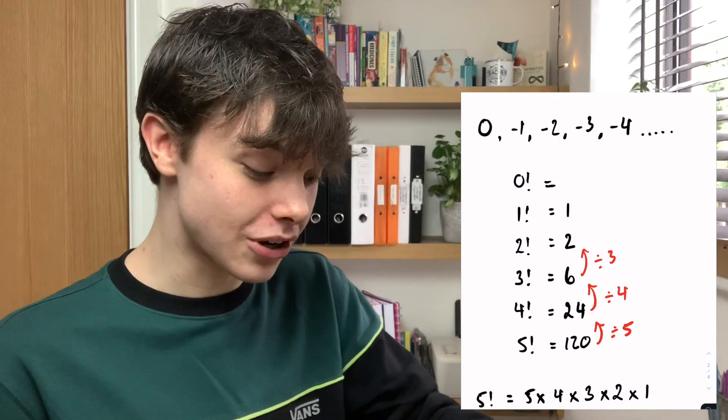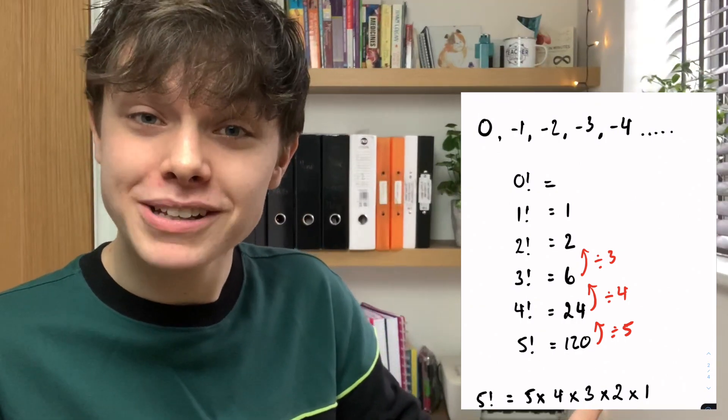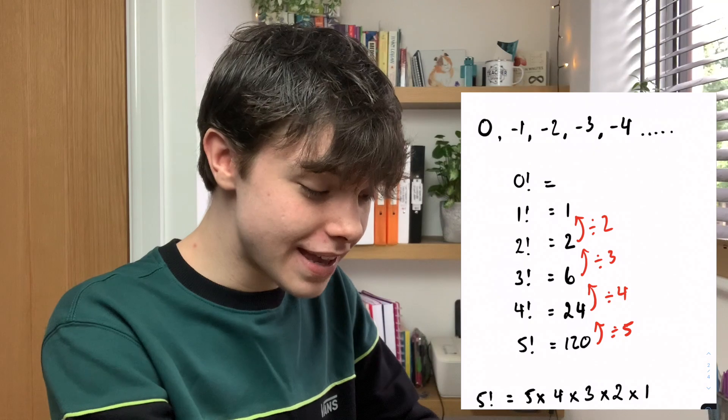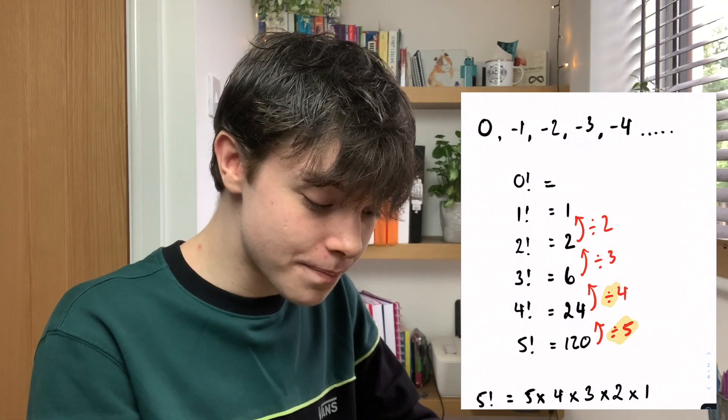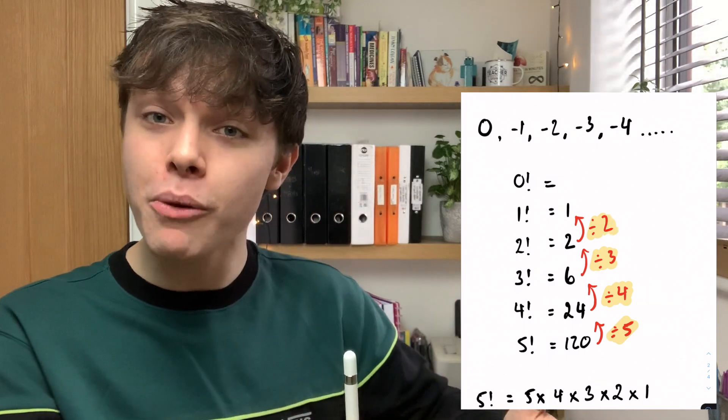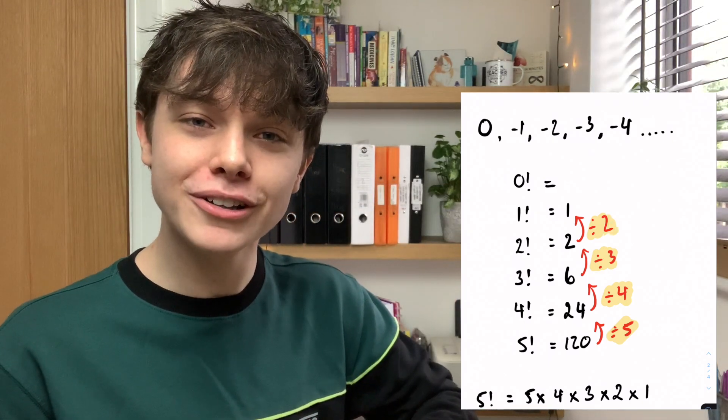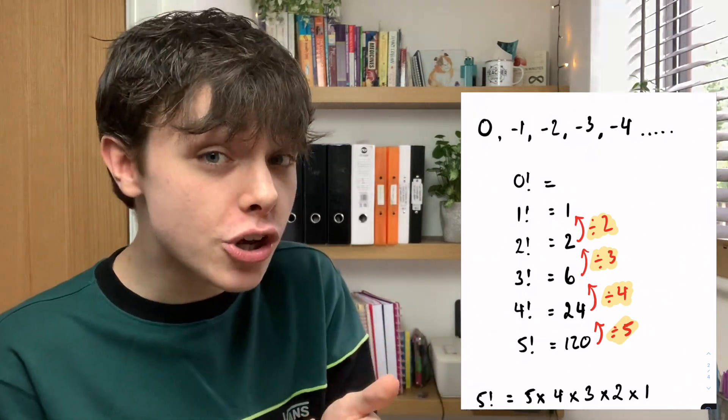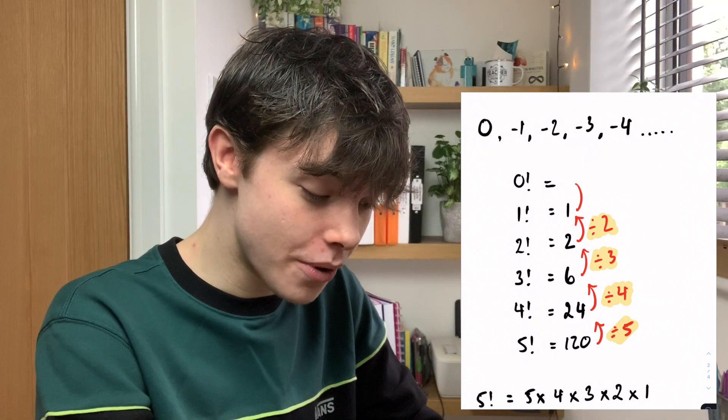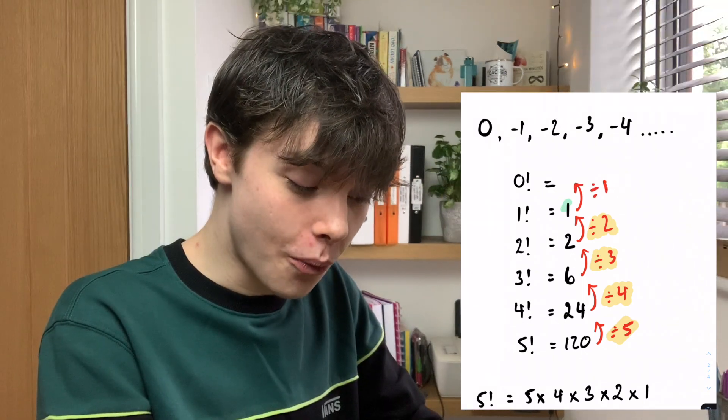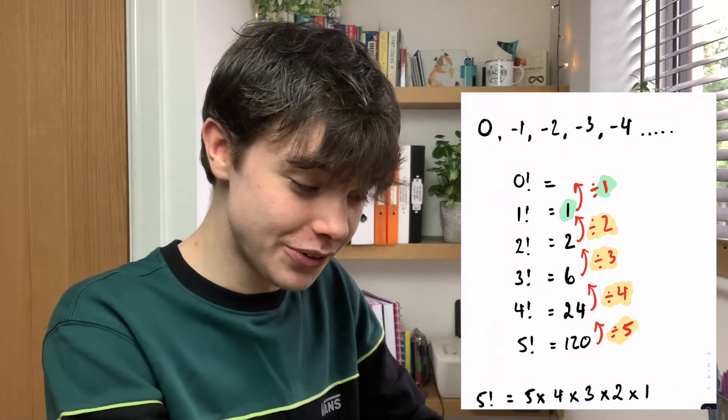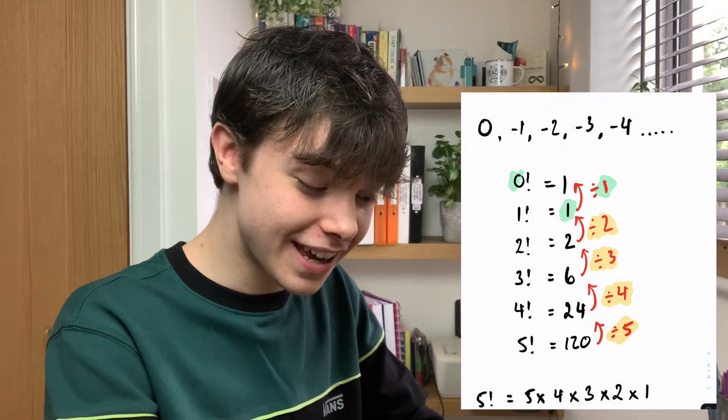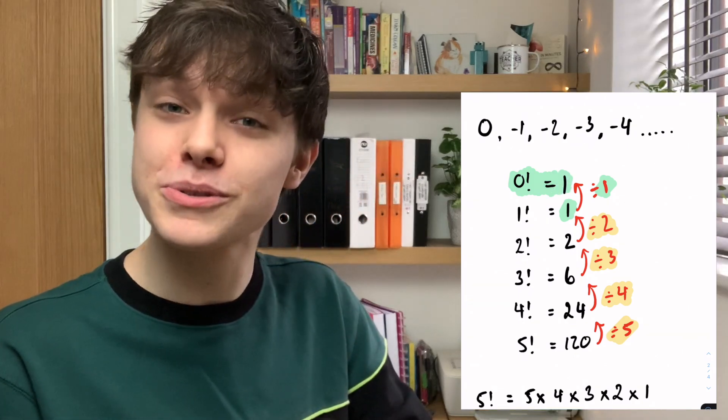Now, you might be able to see the pattern here. To go from 2 factorial to 1 factorial, we're going to divide by 2. Now, what I want you to look at is the numbers that we're dividing by. Each time, they're decreasing by 1. So, to go from 1 factorial to 0 factorial, we're going to divide by 1. Because to go from 2 factorial to 1 factorial, we're divided by 2. So, 1 less. This time, we're going to divide by 1. So, 1 divided by 1 gives us 1. So, therefore, we can see that 0 factorial is equal to 1.